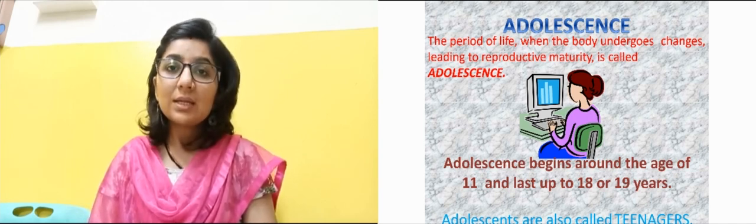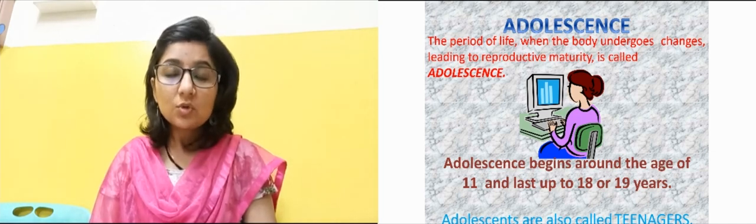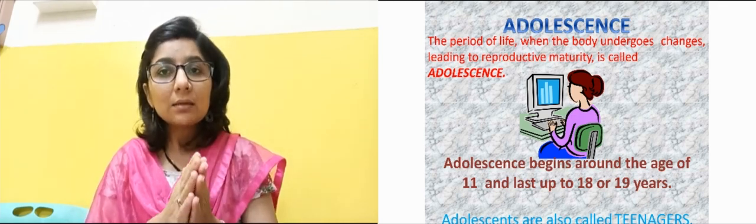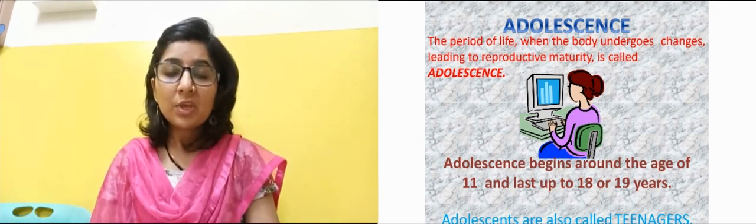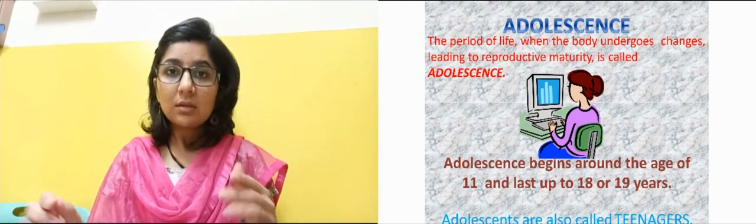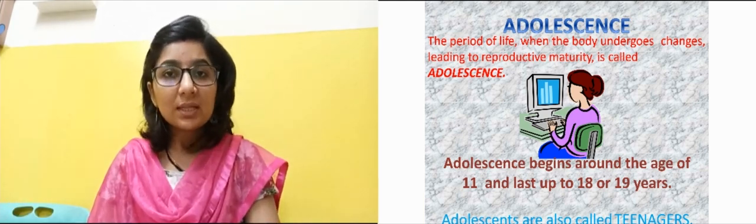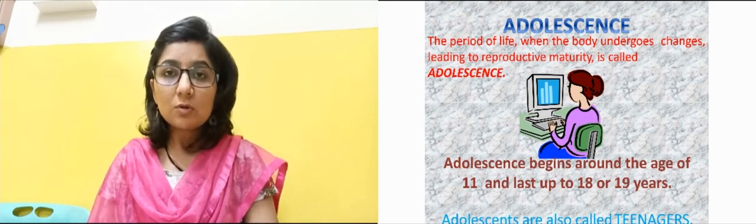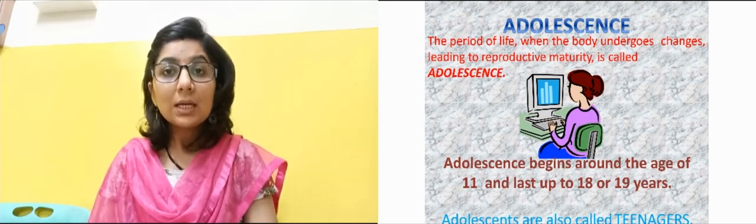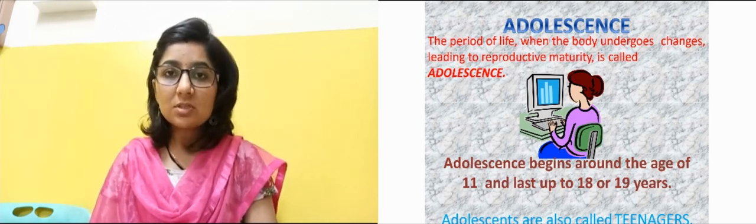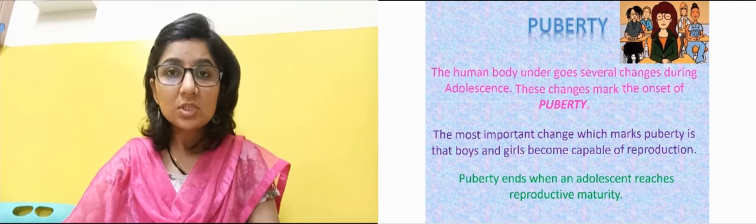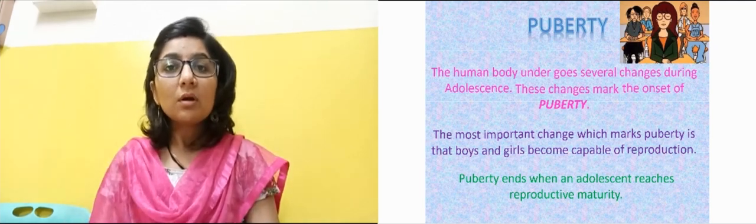Adolescence generally begins at the age of 11 and lasts up to 18 to 19 years — mostly the teen years, from 13 to 19. This phase is also called the teenage, and adolescents are called teenagers.